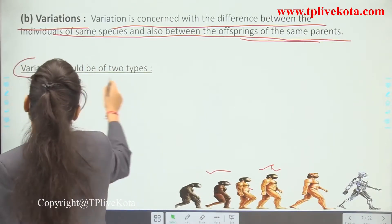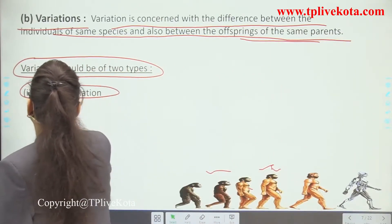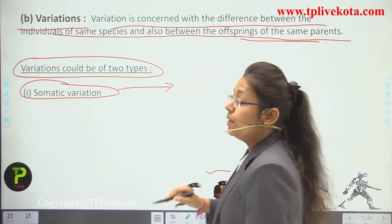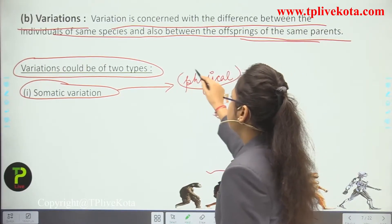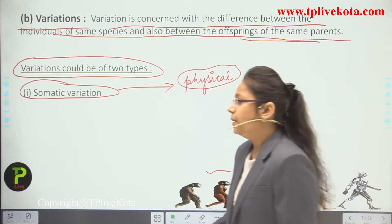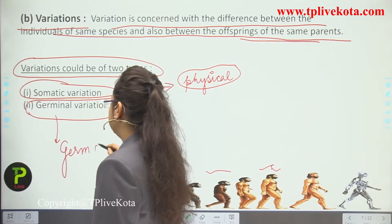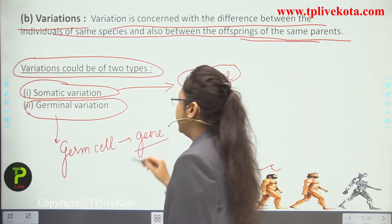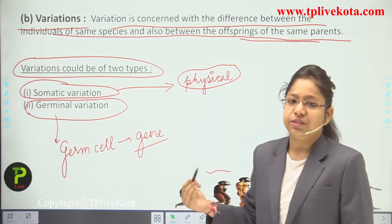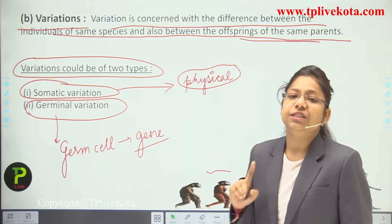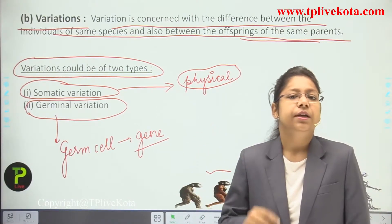Variations could be of two types: somatic variation and germinal variation. Somatic variation does not compare with genetic variation as it involves physical or physiological changes inside the human body. Germinal variation is the variation which has occurred in the germ cell — that is, the gene of an organism. Germinal variation can be transferred from one parent to offspring, but somatic variation does not get transferred — it depends upon the type of environment you are living in.